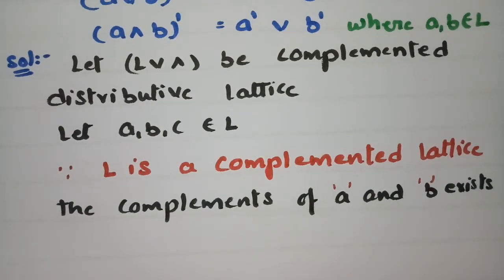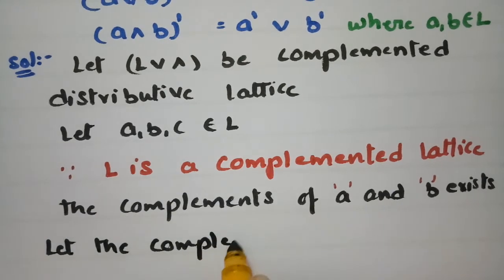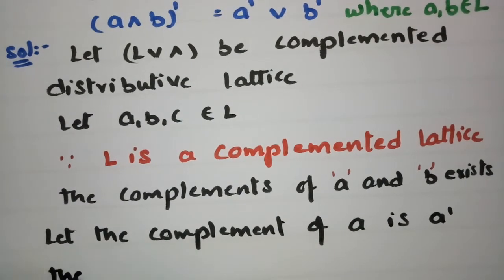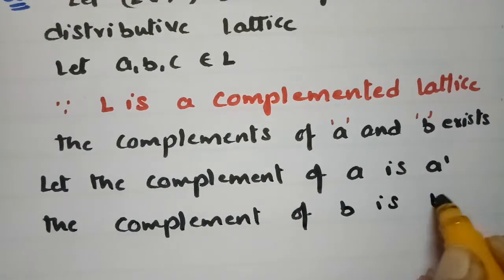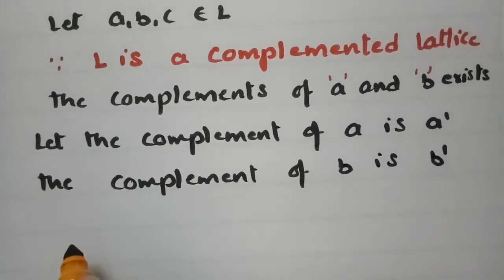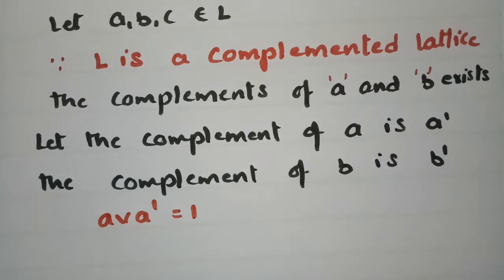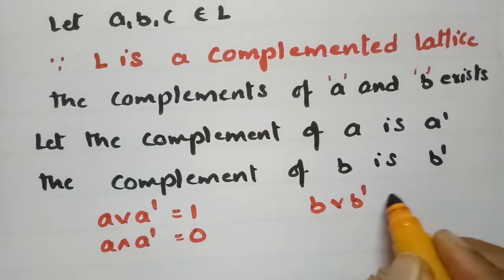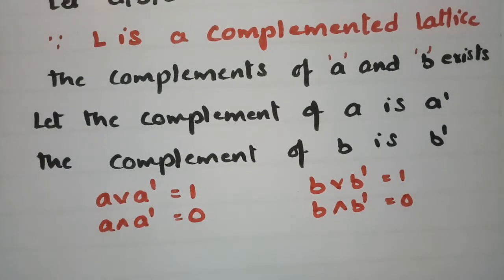Let the complement of A be A' and the complement of B be B'. According to the definition of the complement: A∨A' = 1 (the greatest element) and A∧A' = 0 (the least element). Similarly, B∨B' = 1 and B∧B' = 0.